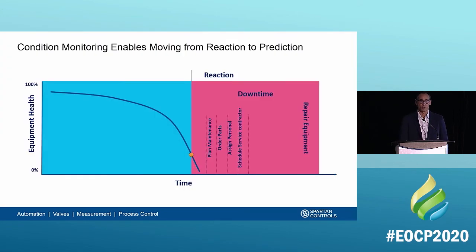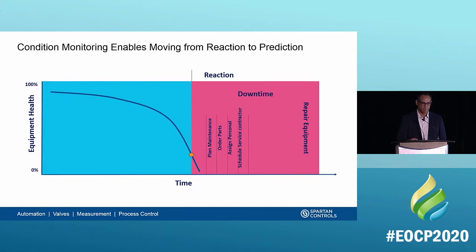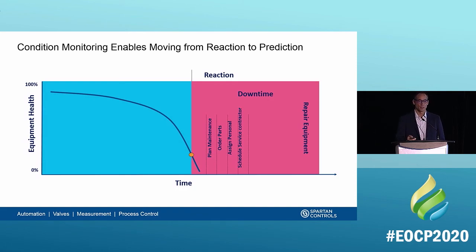So why is condition monitoring so important and how can we leverage it? Let's look at what we call a standard PF curve. On the x-axis is time and on the y-axis is equipment health, from zero to 100%. A 100% means a brand new, completely healthy piece of equipment, while zero means that equipment has failed to the point where it will no longer perform its duty. Over time, once a fault is generated in the machinery, the health degrades until it reaches functional failure — the point at which we must repair it, incurring downtime.